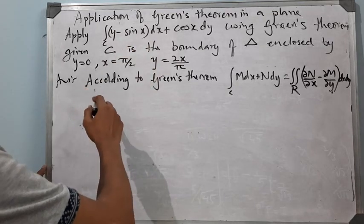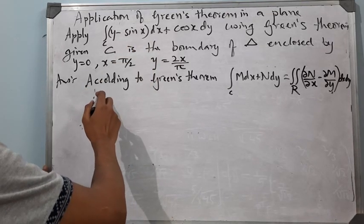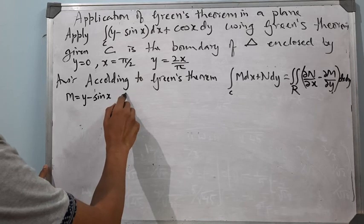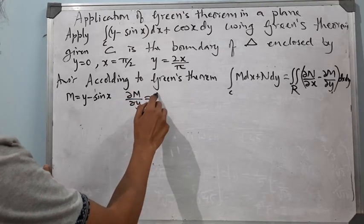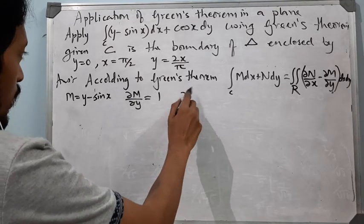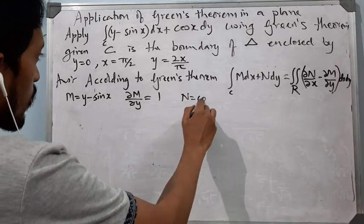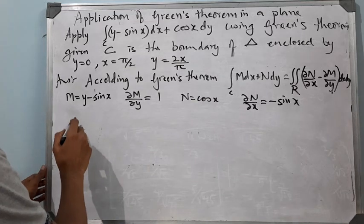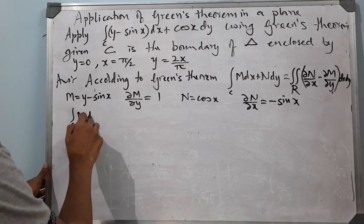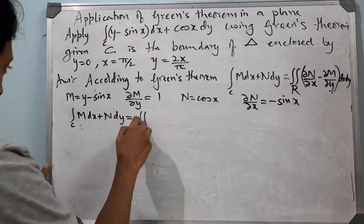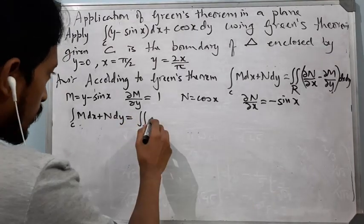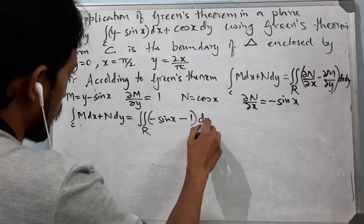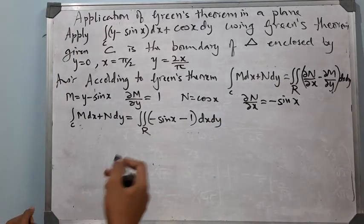M and N are continuous functions and so are their partial derivatives. Here M = y − sin x, so ∂M/∂y = 1. And N = cos x, so ∂N/∂x = −sin x. Therefore ∮_C M dx + N dy = ∬_R (−sin x − 1) dx dy.